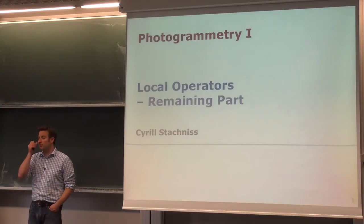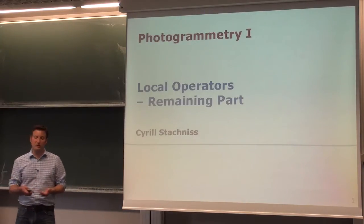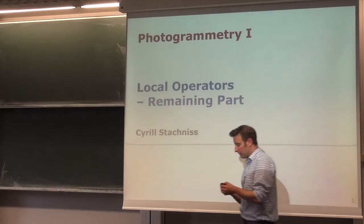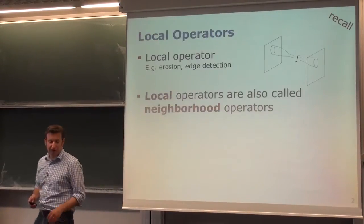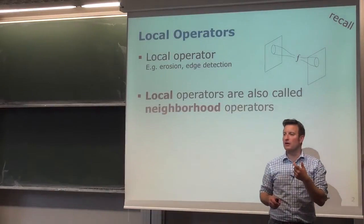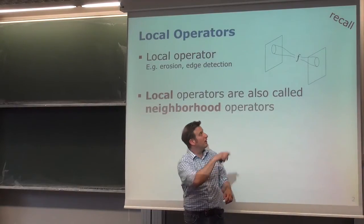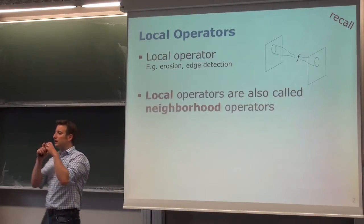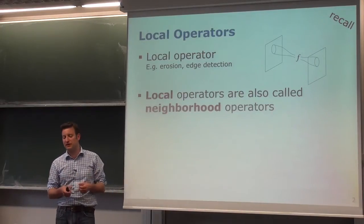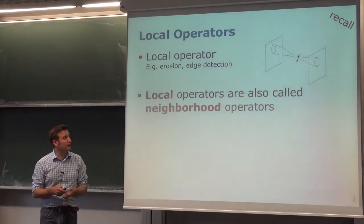We continue with the topic of local operators from last week. Local operators generate a mapping from an input image to an output image. For computing the corresponding output pixel value, we take into account a small region in the input image — a neighborhood. Depending on how large this neighborhood is defined, these are called local operators or neighborhood operators.